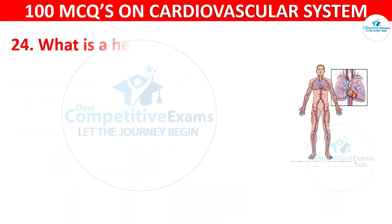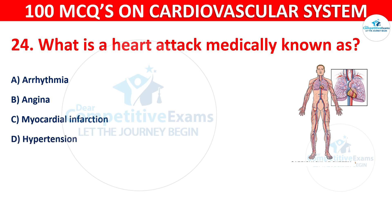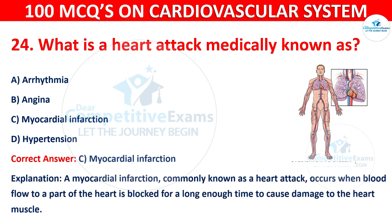Q24. What is a heart attack medically known as? Options are: arrhythmia, angina, myocardial infarction, or hypertension. The correct answer is C — myocardial infarction. A myocardial infarction, commonly known as a heart attack, occurs when blood flow to a part of the heart is blocked for long enough to cause damage to the heart muscle.